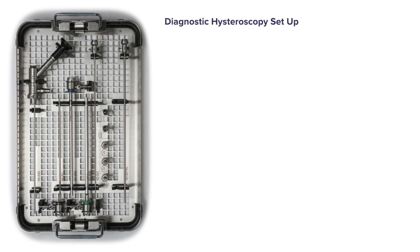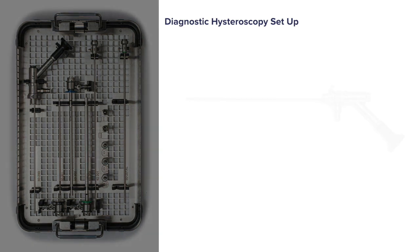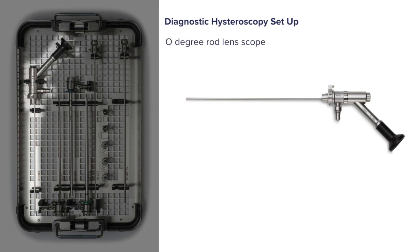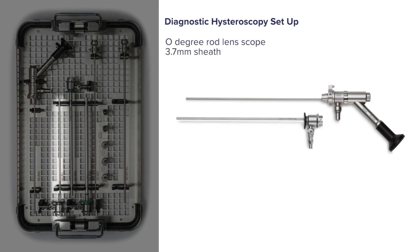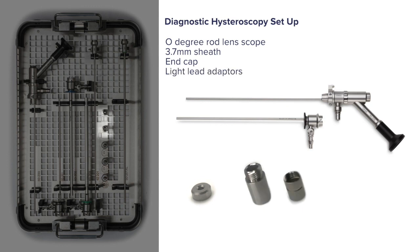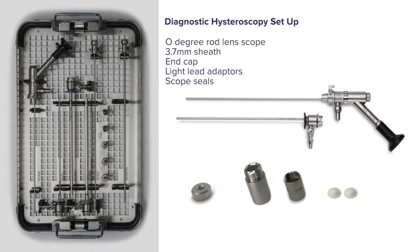To carry out a diagnostic hysteroscopy using the Omni Scope you will need the following items. There are six in total: one zero-degree rod lens scope, one 3.7mm sheath marked black, one end cap, two light lead adapters depending on your light source, one packet of single-use scope seals.